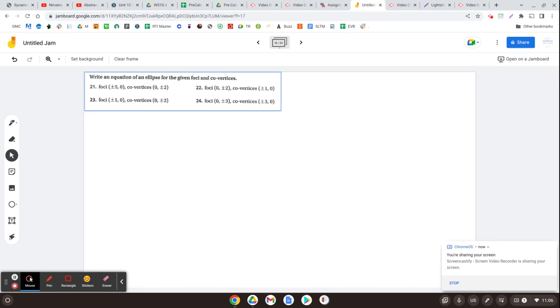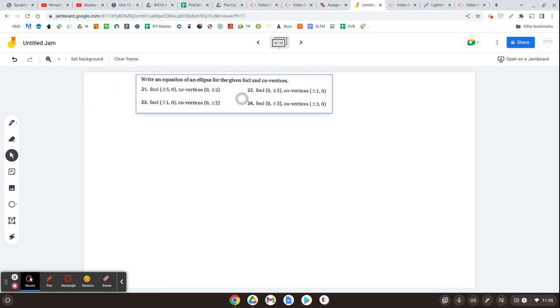All right, here we go. More ellipses - this problem is absolutely on your test, although I don't think the foci equal the co-vertices on your test. Okay, so the co-vertices are along the smaller or the minor or the semi-minor axis.